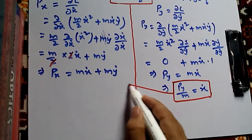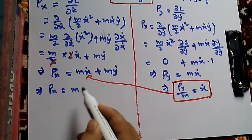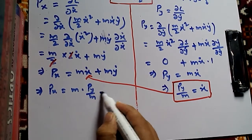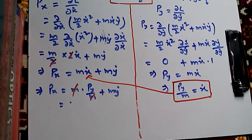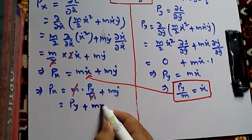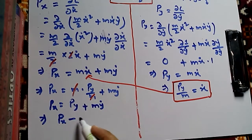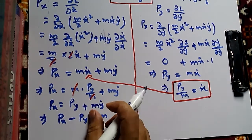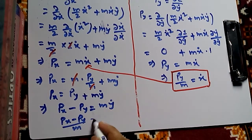To find Y-dot, we substitute X-dot equals Py/m back into the expression for Px. We had Px equals M X-dot plus M Y-dot, which gives Px equals Py plus M Y-dot. Rearranging: Px minus Py equals M Y-dot, so Y-dot equals (Px minus Py)/m. We now have both X-dot and Y-dot.